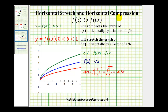Now for the horizontal stretches and compressions — this is a little bit more involved. If y equals f of b times x where b is greater than one, this will compress the graph of the parent function horizontally by a factor of one over b. So if we have g of x equals f of two times x, which would be the square root of 2x, this will be a horizontal compression. Then if we have y equals f of bx where b is between zero and one, this will stretch the graph horizontally by a factor of one over b. For example, if we have h of x equals f of one-half x, which would be the square root of one-half x, or the square root of 0.5x, this would be a horizontal stretch, so we would take the blue graph and stretch it horizontally, forming the red graph.